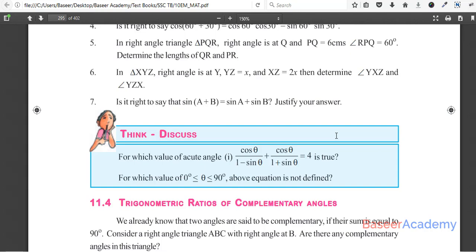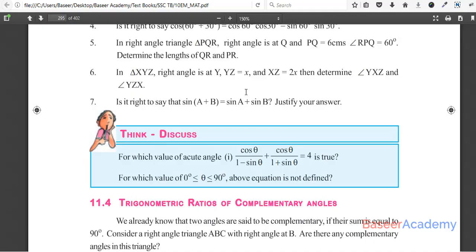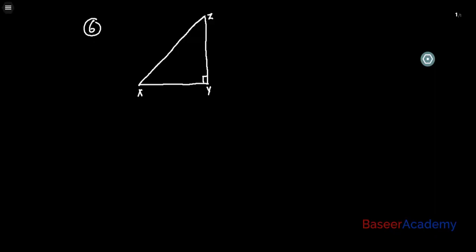The question says in triangle XYZ, right angle is at Y. So I have already drawn a right angle triangle here with angle Y as 90 degrees. YZ is given as X and XZ is given as 2X.